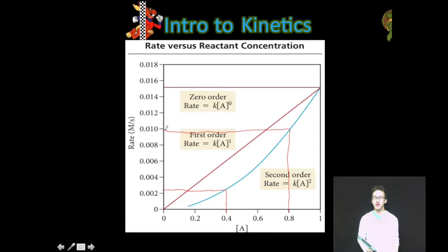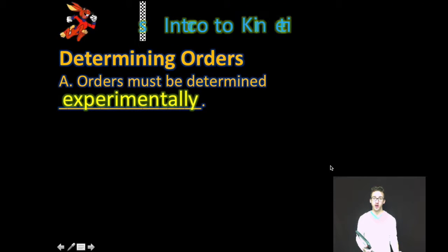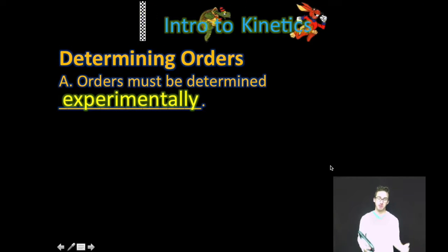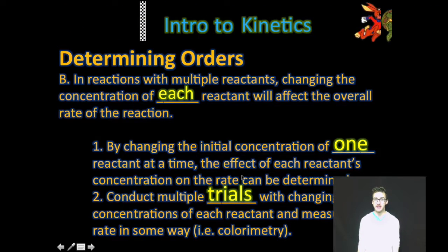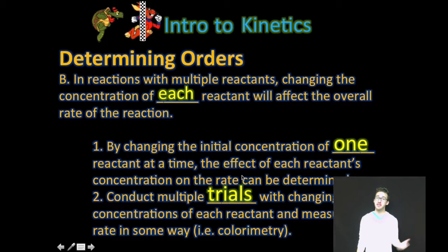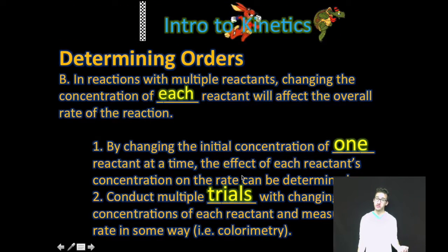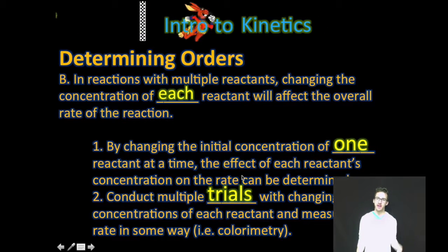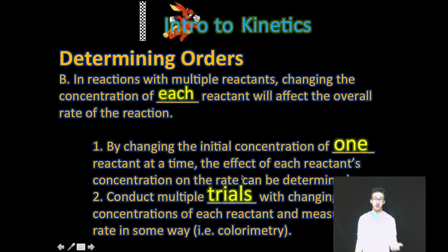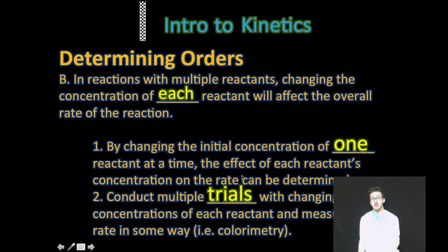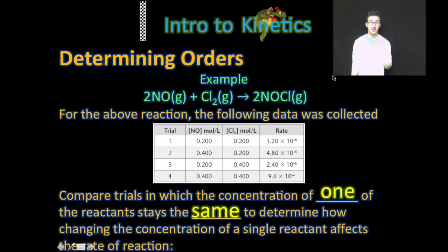Orders must be determined experimentally — this cannot be emphasized enough. When you have a reaction with multiple reactants, changing the concentration of each reactant will affect the overall rate of the reaction. What you want to do is change the initial concentration of just one reactant at a time. That way, you can determine the effect of each reactant's concentration on the rate individually. You'll have to conduct multiple trials, change the concentration of each reactant, and measure the rate — usually using colorimetry.